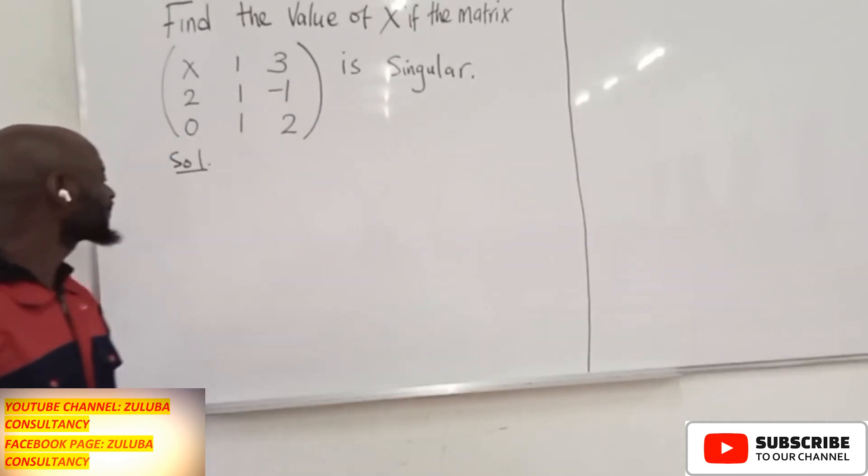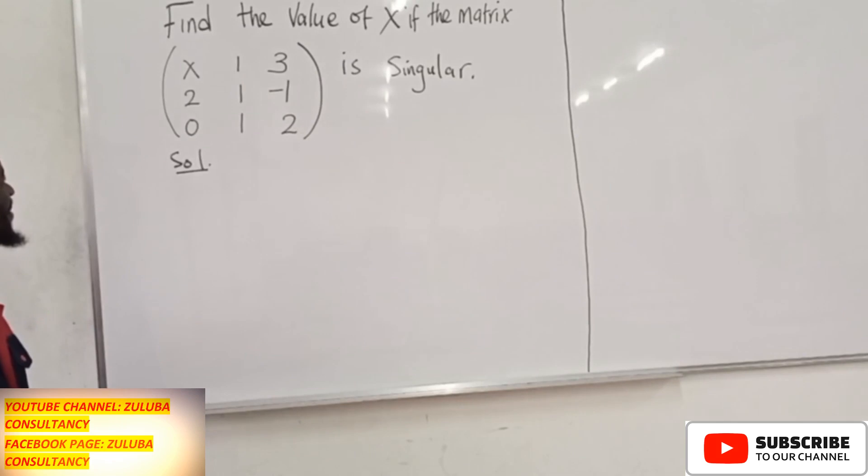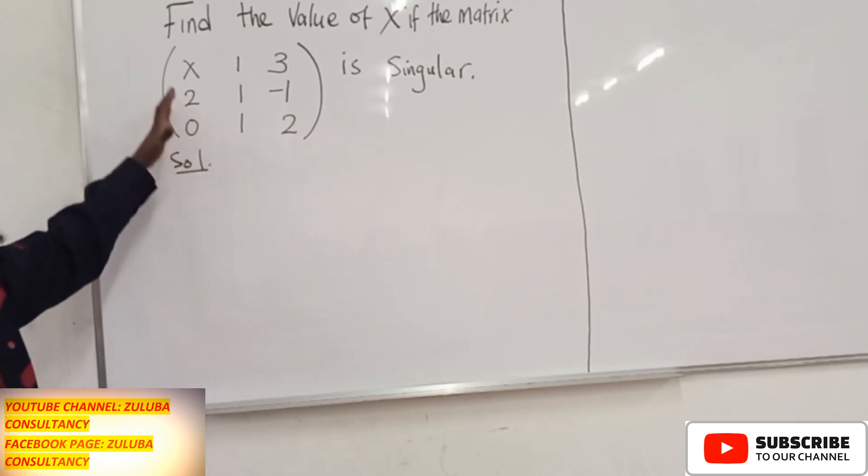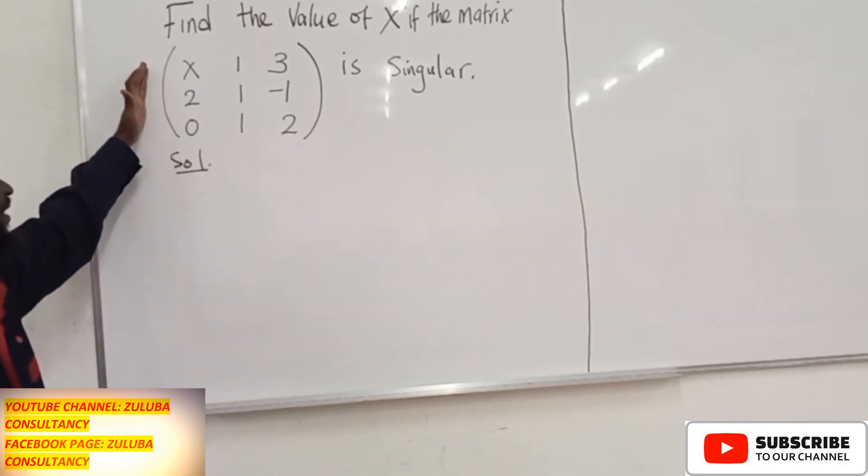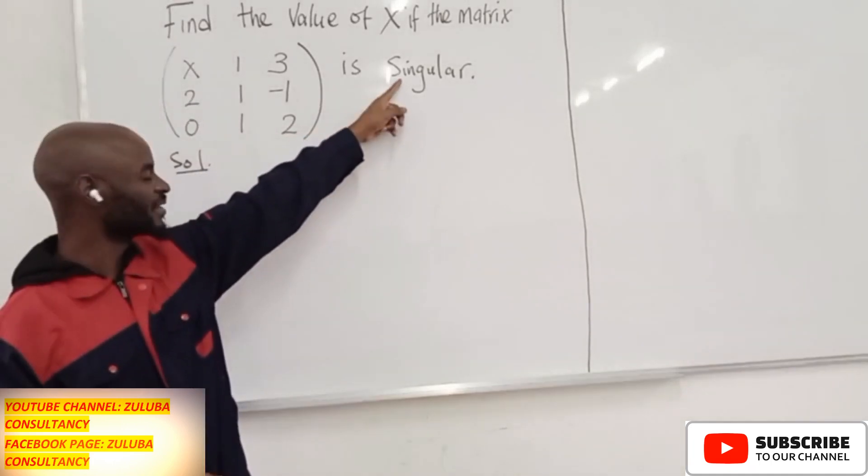Now, there are so many ways in which we can find the determinant. I will use one of the ways, but you can use other ways as well. The issue here is you need to find the determinant and equate it to zero because the matrix is singular.